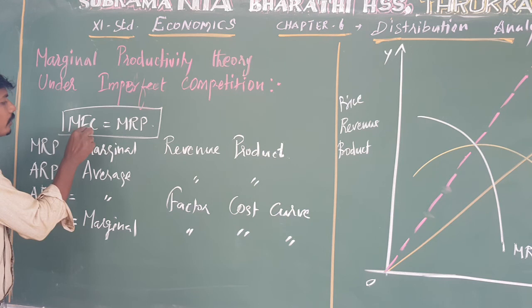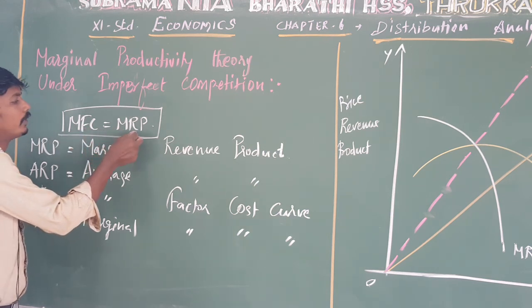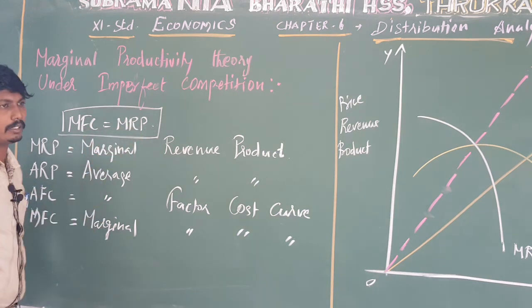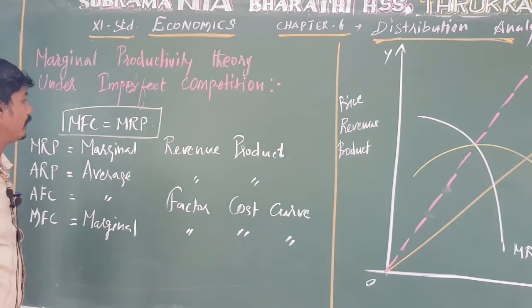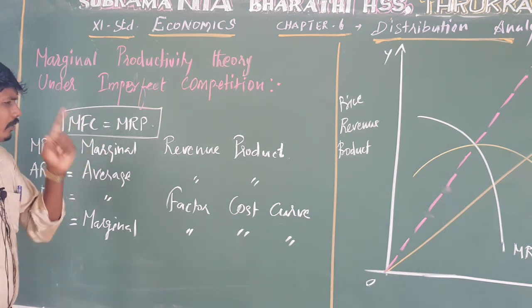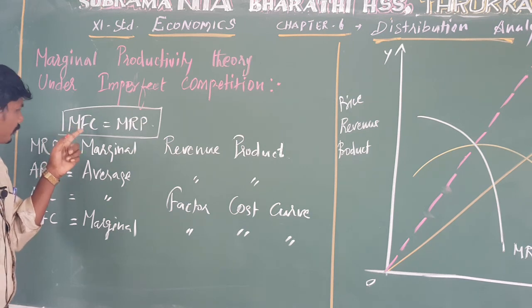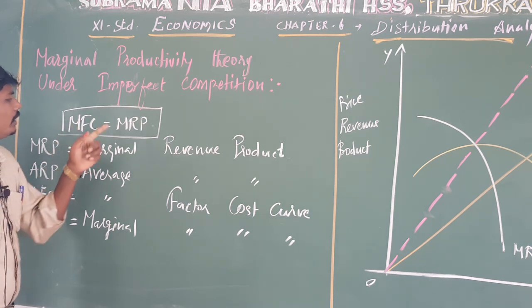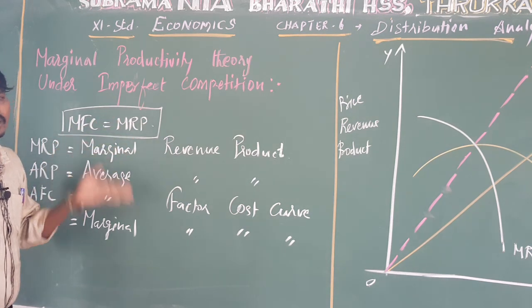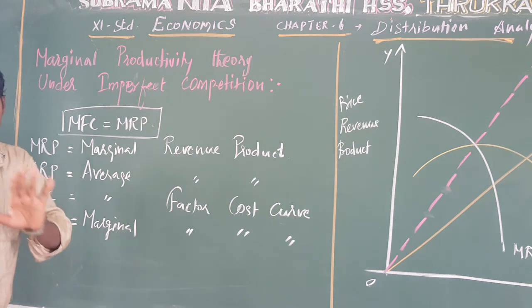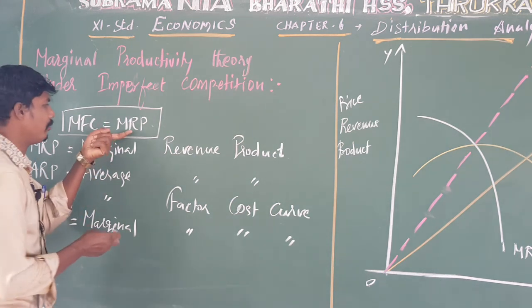Factor cost equals marginal revenue product — MFC equals MRP. This is the equilibrium condition under imperfect competition.